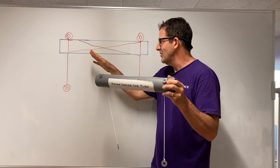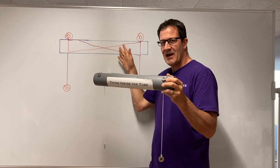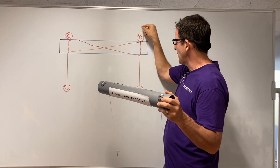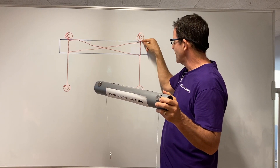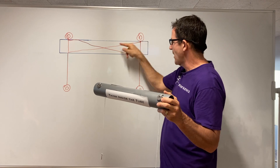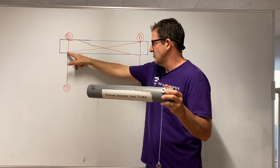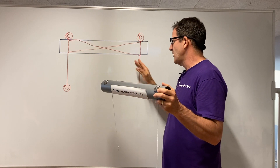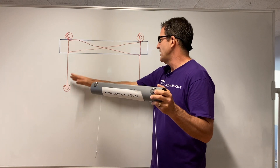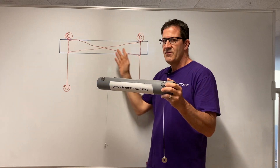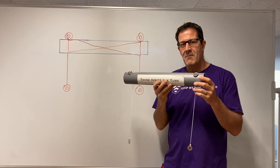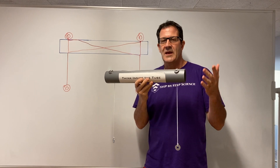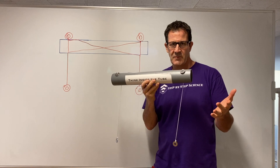Avery, stop throwing things in class. You missed me, Avery. Now, Donna's drawing doesn't work because everything is tied together and really nothing will move. If I try to pull this one up, then this one will not be able to move because it's also attached over here. And the same thing if I try to pull this one up — this one will not move because it's also attached over here. So this explanation does not match what we saw for experiment number one and for experiment number two.